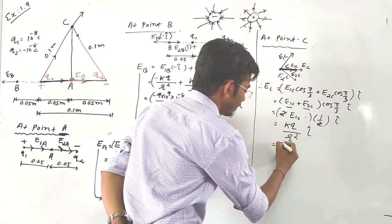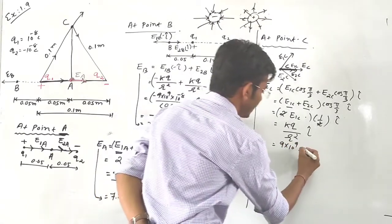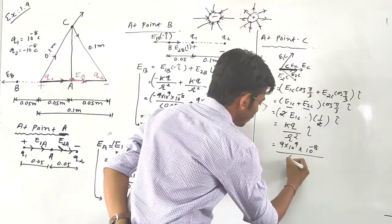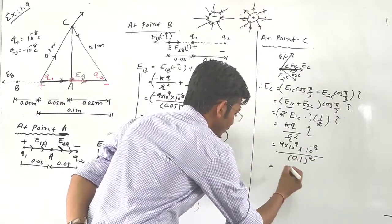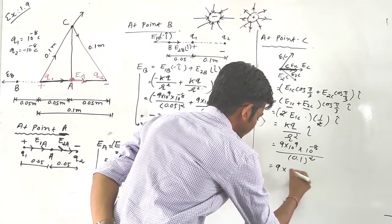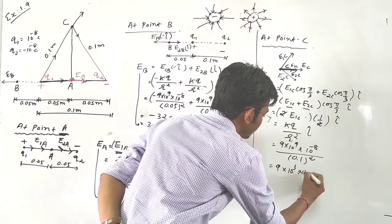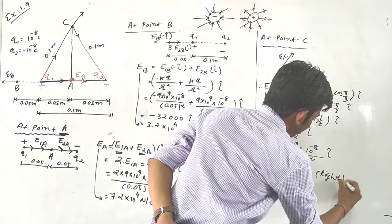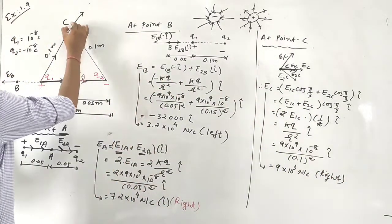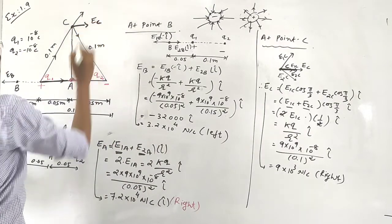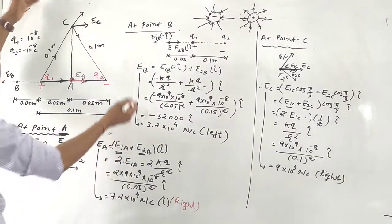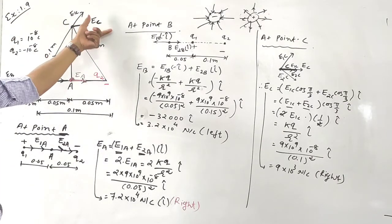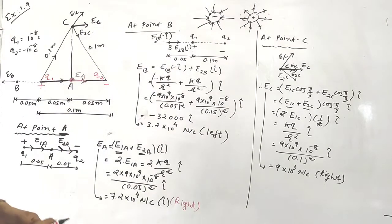Electric field at point C: K × Q / R², where K is 9×10⁹, Q is 10×10⁻⁸, and the distance R is 0.1 m. Simplifying, the answer is 9×10³ N/C. The resultant electric field at point C is in the plus x-direction (right side), which we can represent as plus i direction.